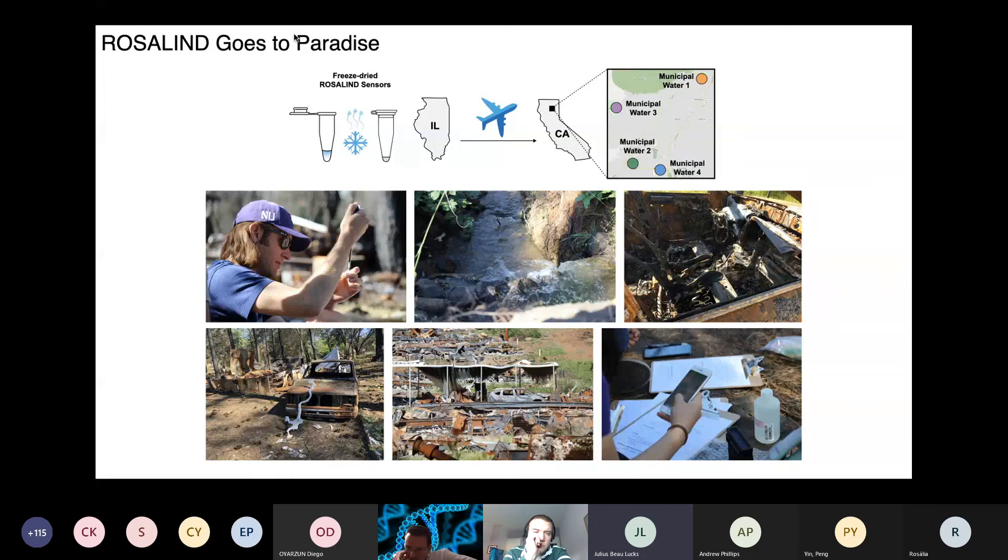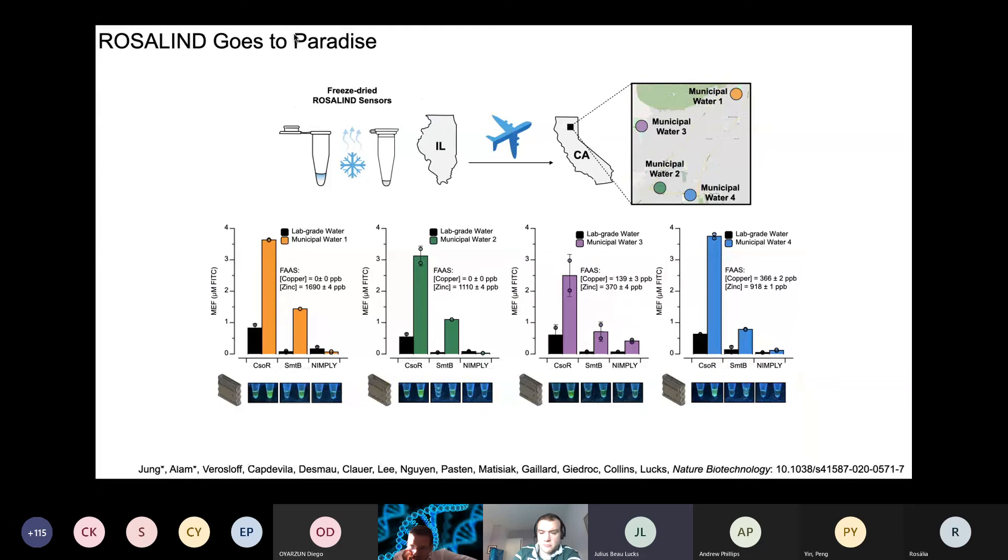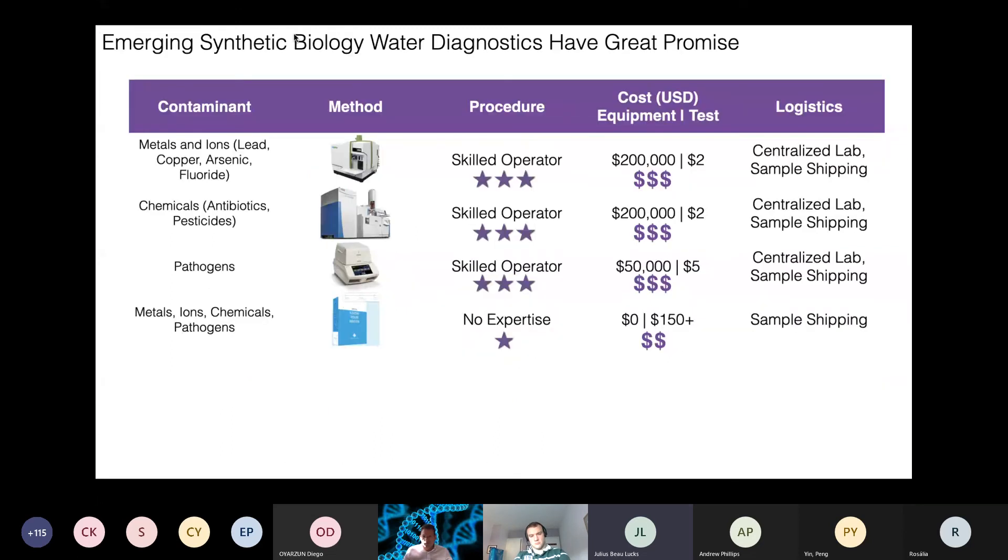Kirsten and Khaled and I actually took some of the metal sensors of Roslyn to Paradise, California, which was devastated in the 2018 campfire. And you can see some of the pictures there showing, which is why people were very concerned with metal contamination, because you basically melted all the metal in the entire town. We actually found some failure modes in terms of the cryopreservation of these reactions that we were able to fix with different packaging. And when we did that, we sent them out to our collaborator, Sandrine Matchasek, and she was able to show that field samples of municipal water in Paradise, California, worked as desired with the copper and zinc sensors and that NIMPLY circuit.